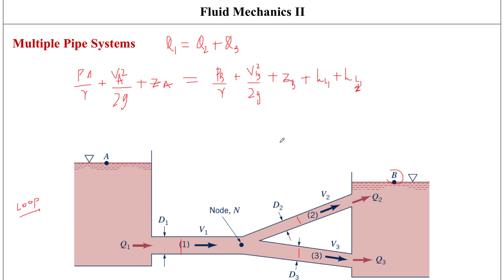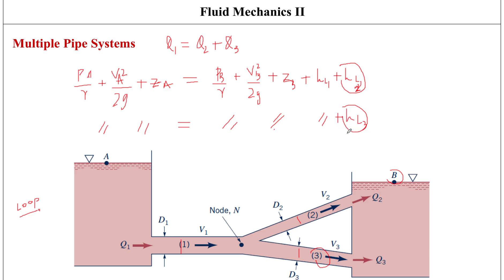Writing the same equation for the third pipe gives an identical form, so we end up with: pressure at A plus velocity plus elevation plus head loss of pipe one plus head loss of pipe three. This means the head loss for pipe two must equal the head loss for pipe three. Although the pipe sizes and flow rates can be different, this is the condition the loop system must fulfill. Combining the two equations gives: head loss at pipe two equals head loss at pipe three — the major governing equation for the loop system.